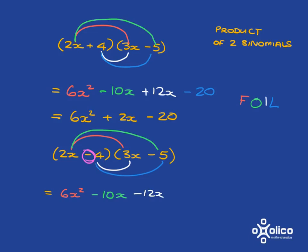Then I'm going to do the last terms - negative 4 multiplied by negative 5, which gives me positive 20.